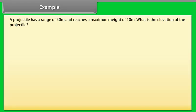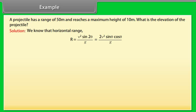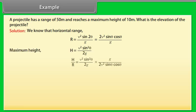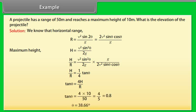Example of projectile motion: a projectile has a range of 50 meters and reaches a maximum height of 10 meters. What is the elevation of the projectile? Using the horizontal range formula R = v² sin 2θ / g, and deriving the relation H/R = (1/4) tan θ, and calculating this equation, we get θ = 38.66°.